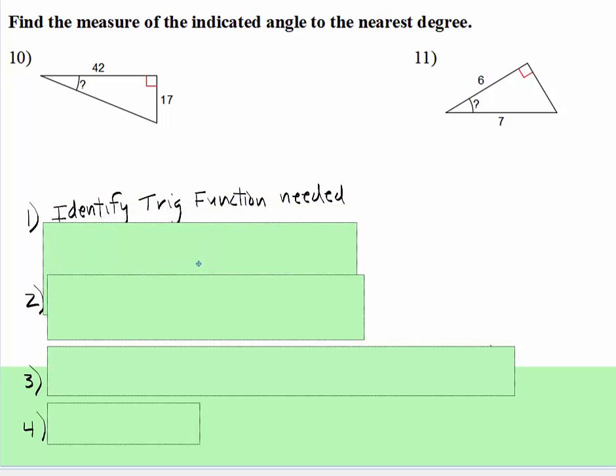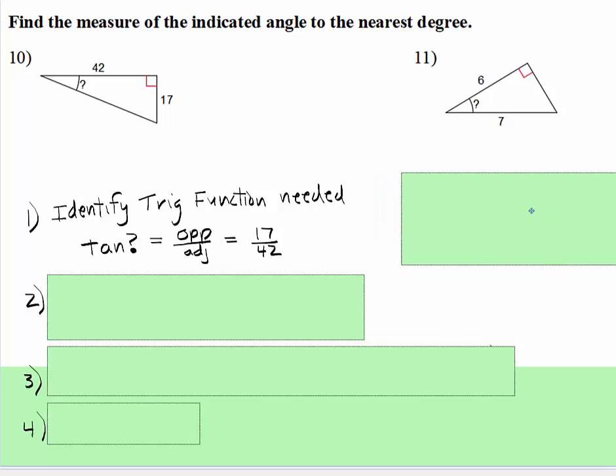Identify the trig function needed. In this case, notice what we have. Here's the theta right here. We have the opposite, here's the hypotenuse (they don't give us that), here's the adjacent. So that's clearly the tangent.